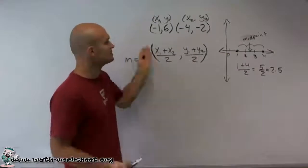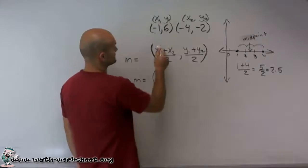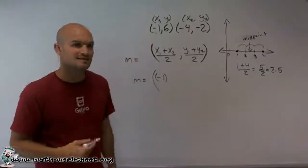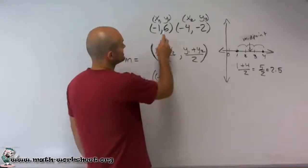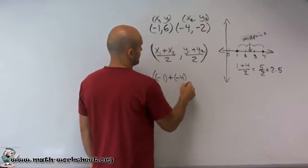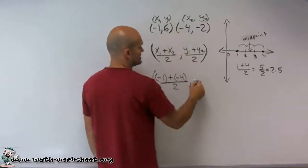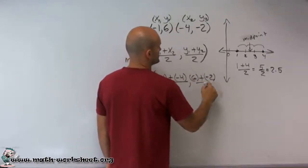So now all I need to do is just plug in my values. So m as the midpoint, m equals, as the midpoint, negative 1. And please make sure you put in parentheses just when you're adding them up, just so you don't confuse with your signs. Negative 1 plus a negative 4, all divided by 2, comma, 6, plus negative 2, divided by 2.